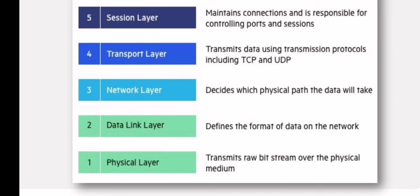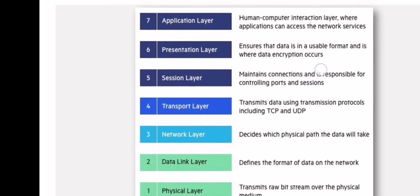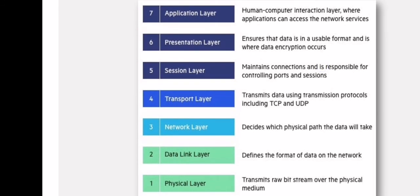Layer number one is the physical layer. The physical layer uses electrical, mechanical, or procedural interfaces to transport data. Let's enumerate the seven layers: seventh is the application layer, sixth is the presentation layer, fifth is the session layer, fourth is the transport layer, third is the network layer, second is the data link layer, and the first layer is the physical layer.